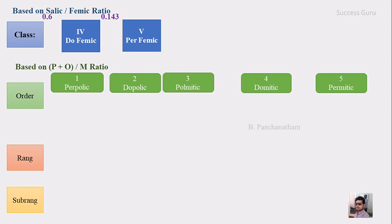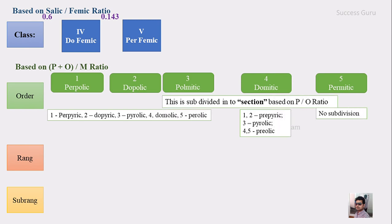For classes 4 and 5 there is one extra subdivision called the section division, which does not exist in classes 1, 2, or 3. The first 3 orders have been subdivided into 5 sections based on the P-by-O ratio: per-piric, do-piric, pyrolic, do-molic, then pyrolic. These are the 5 section divisions for orders 1, 2, and 3. For the 4th order there are 3 sections — the first 1 and 2 together are called pre-piric (remember: PRE means 3 divisions), then the 3rd is pyrolic, then pre-piric again. For order number 5, there is no subdivision into sections.